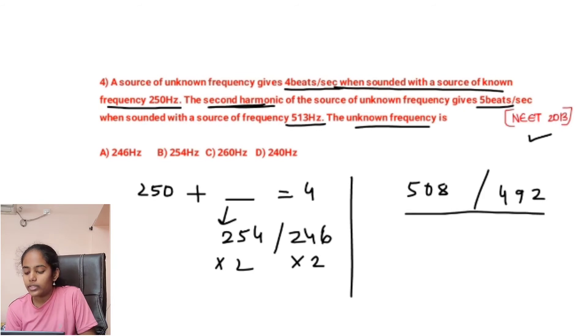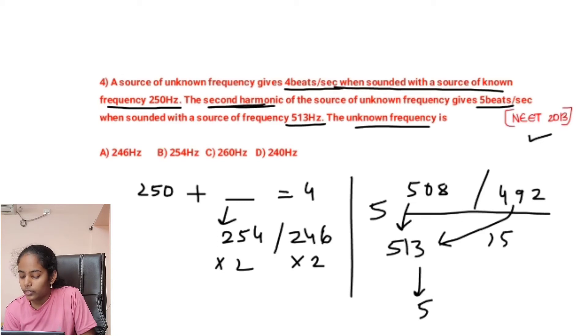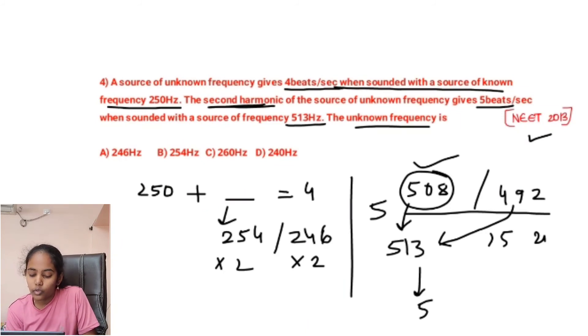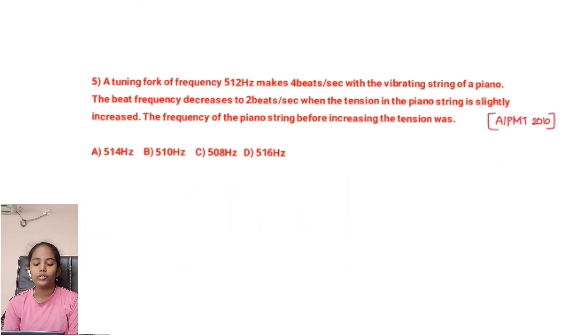They are saying when second harmonic is sounded with a known frequency 513 hertz, they produce 5 beats per second. So we have to check 508 and 513, it is 5 beats. And 492 and 513, it is more than 5, something like 21 beats. So this one will be our answer. So the unknown frequency will be 254.